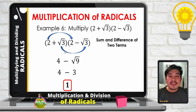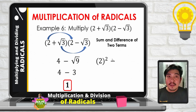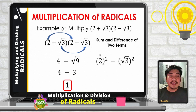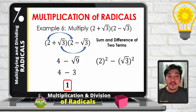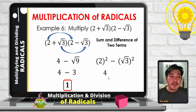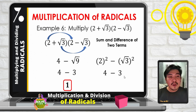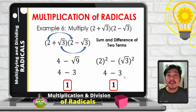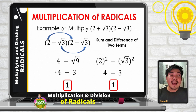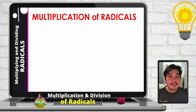The shortcut for the sum and difference of two terms: square the first term, which is 2, then always minus, then square the second term, which is square root of 3. So 2 squared is 4, then square root of 3 squared is square root of 9 or 3. So 4 minus 3 equals 1 — the same result regardless of which technique we use.